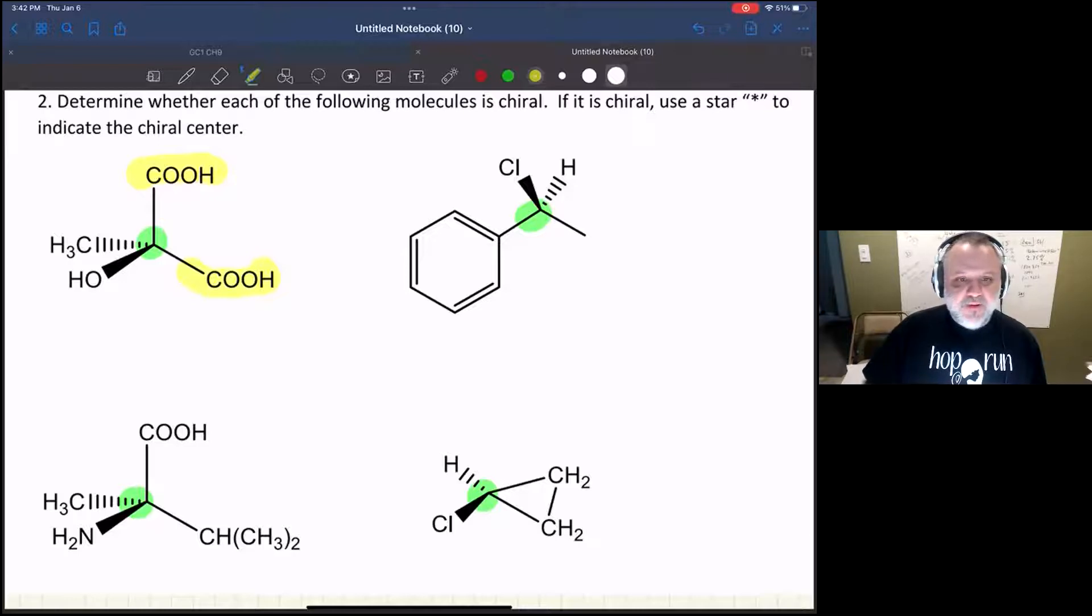What about this next carbon? I've got one, two—those groups are definitely different. Here's a methyl group, that's three, that's different. And I've got a benzene ring, that's certainly different. So here is a chiral center for sure.